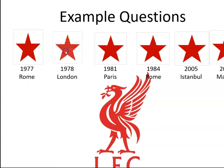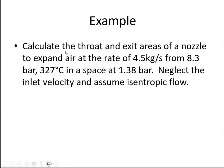And example two. Calculate the throat and exit areas of a nozzle to expand air at the rate of 4.5 kilograms per second from 8.3 bar, 327 degrees Celsius in a space at 1.38 bar. Neglect the inlet velocity and assume isentropic flow.